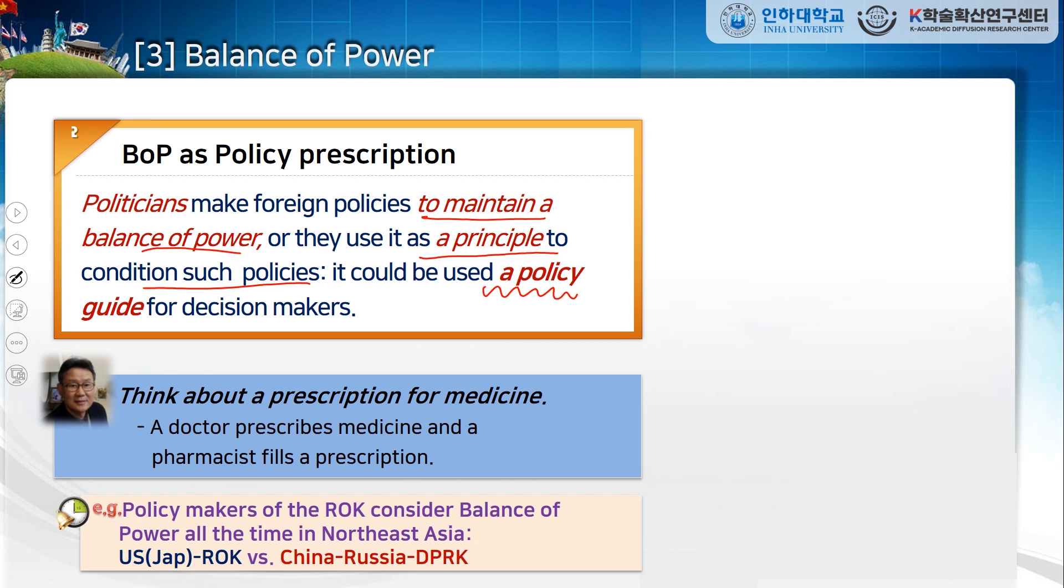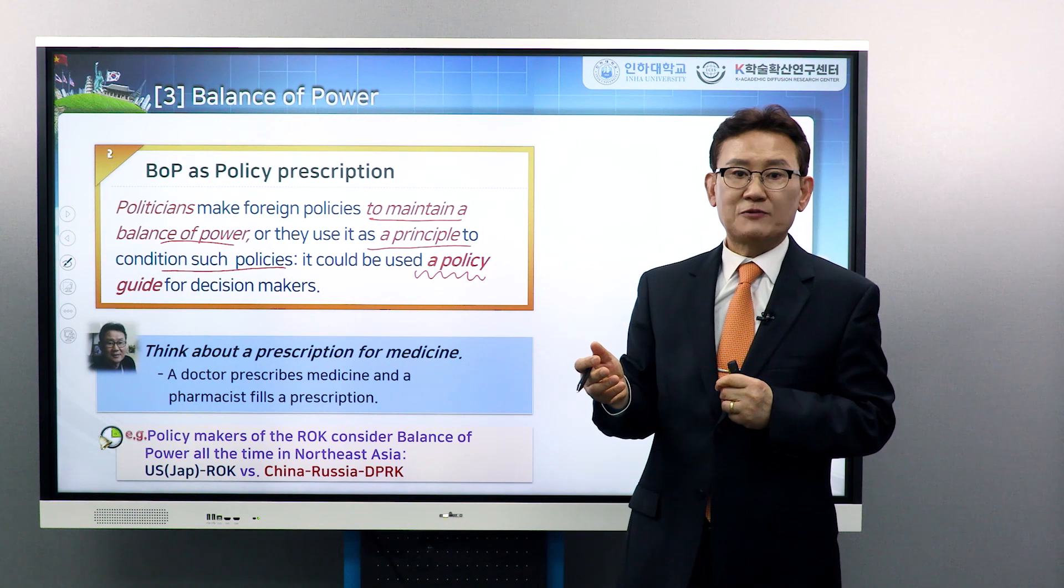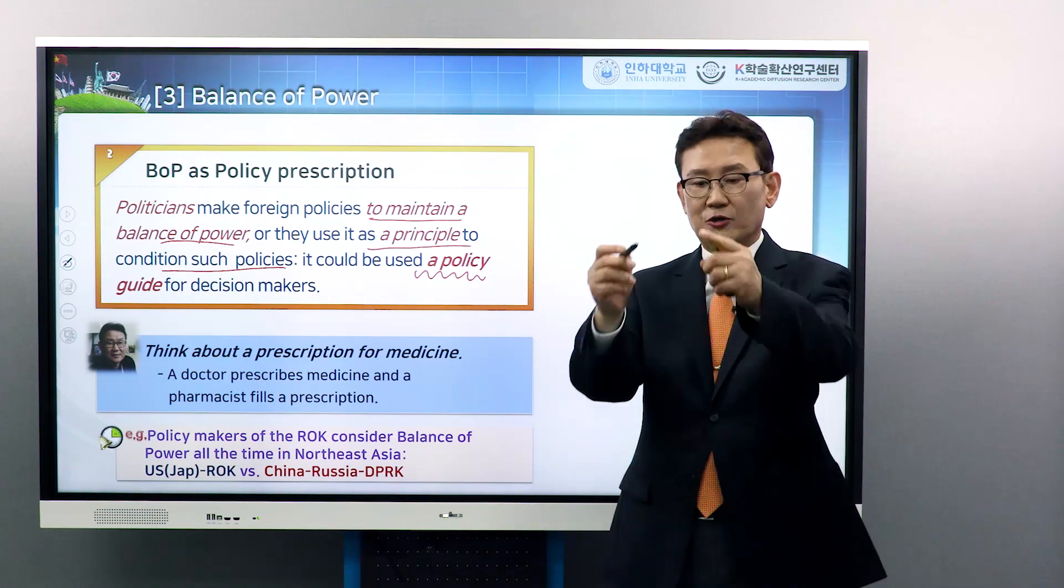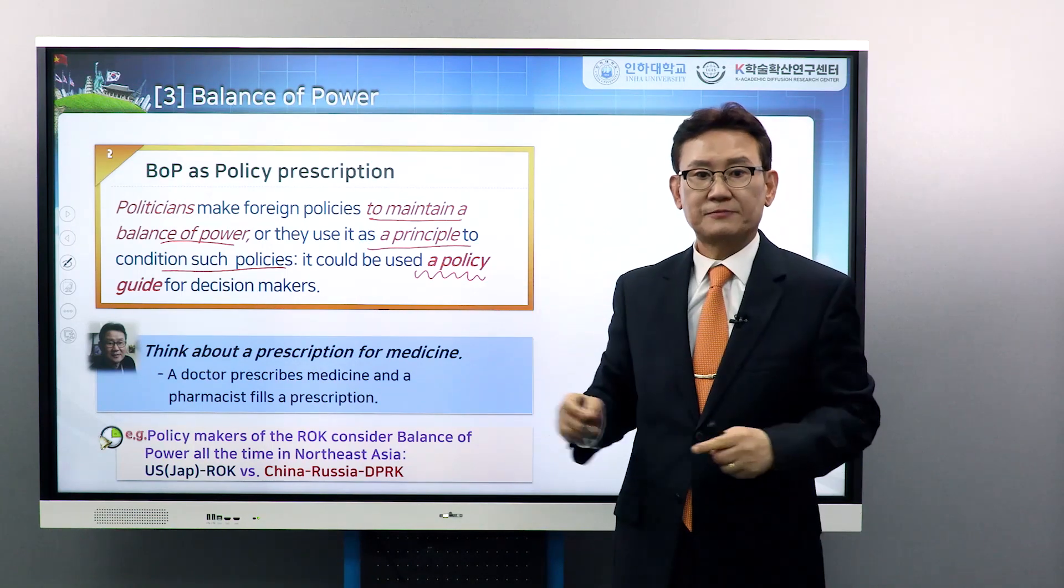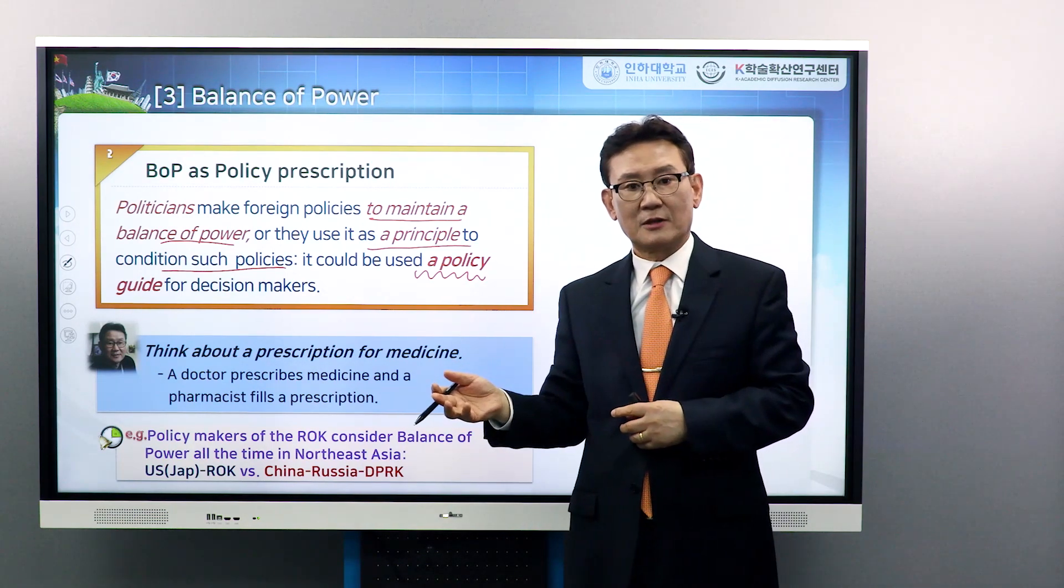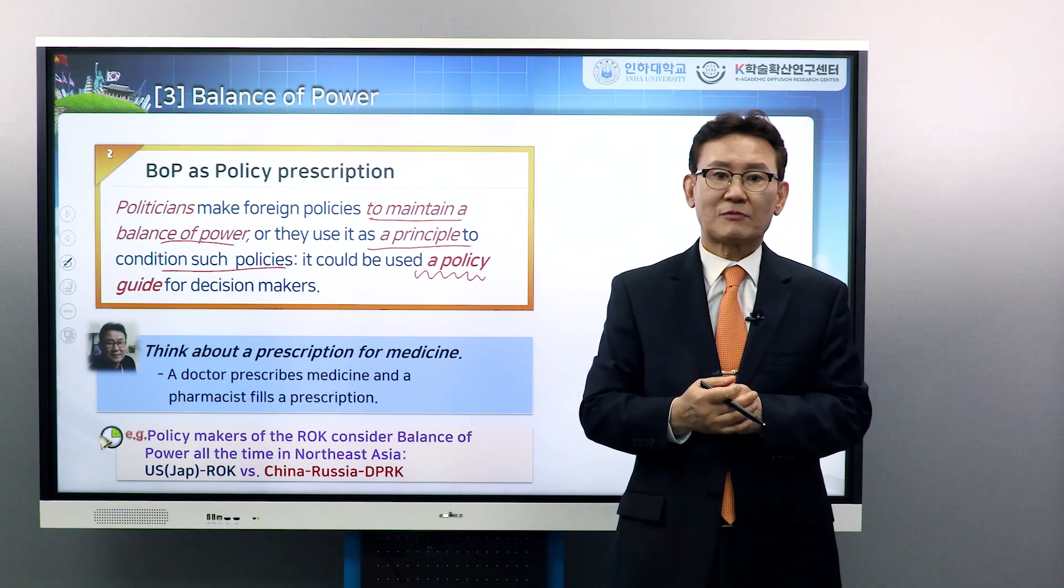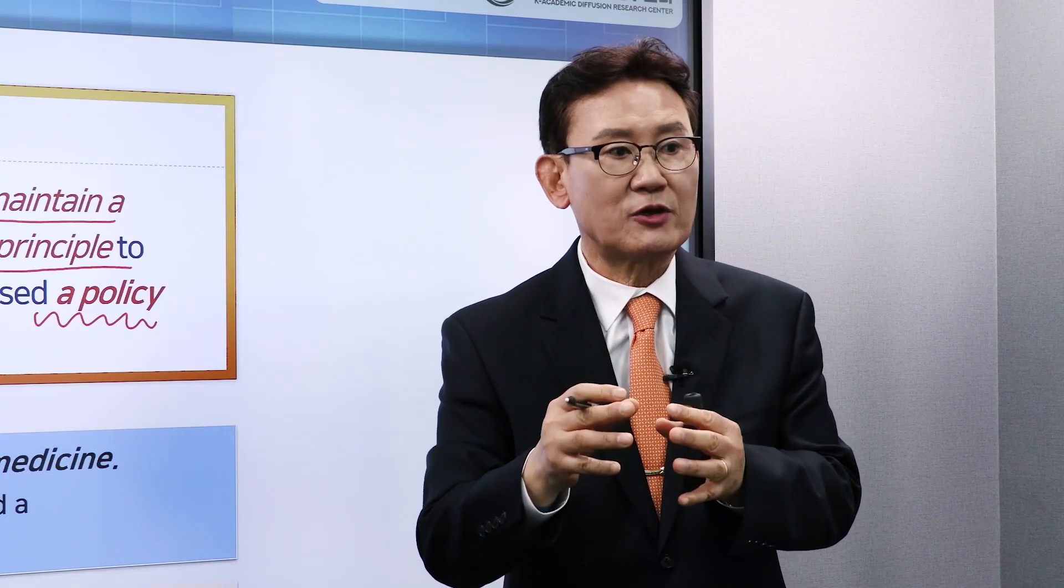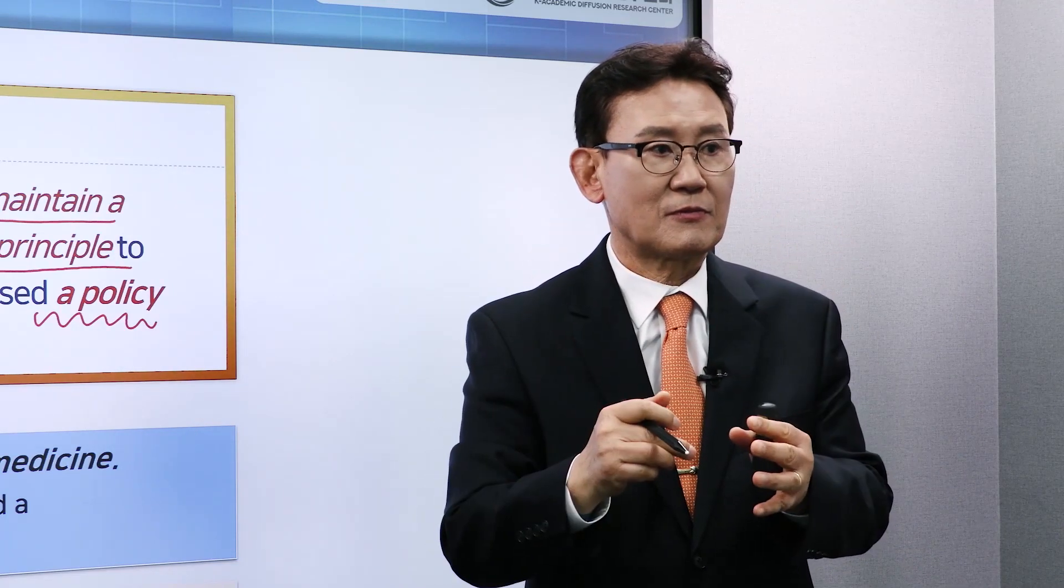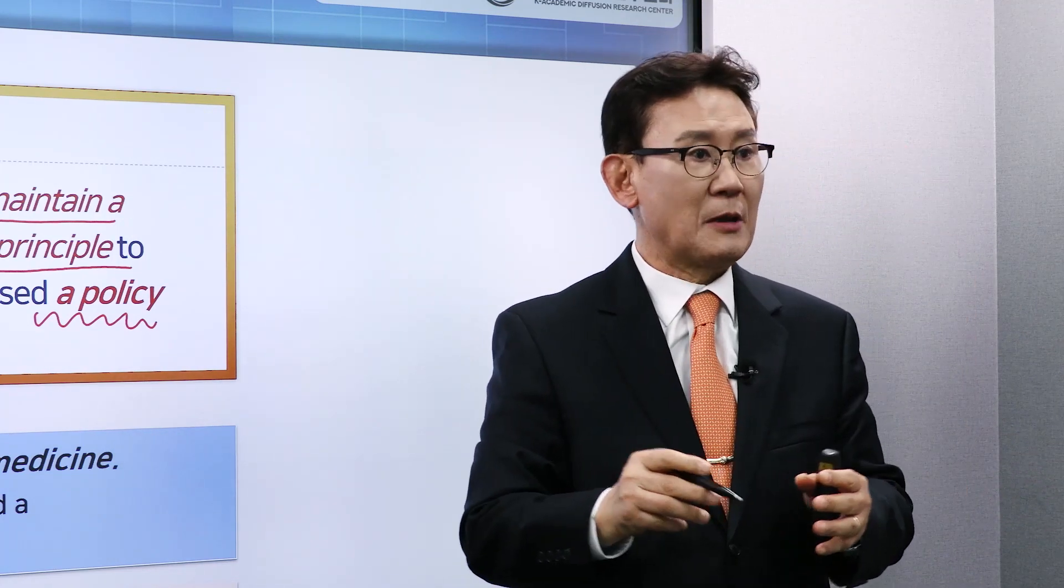Let's make an analogy of the prescription. If we go to a doctor and the doctor prescribes a medicine, he or she gives a prescription sheet. You go to a pharmacist and the pharmacist fills that prescription, making drugs according to the prescription. Policy makers are making policies according to that prescription, balance of power.